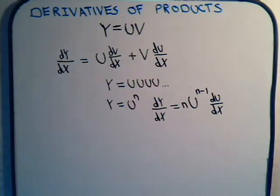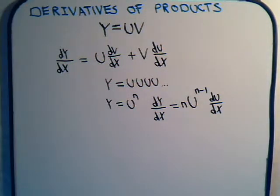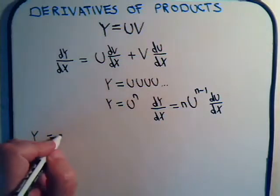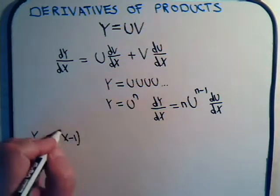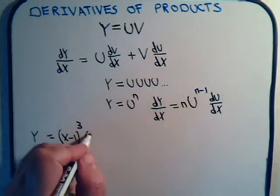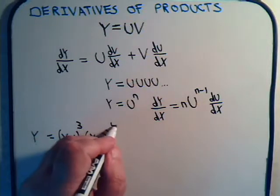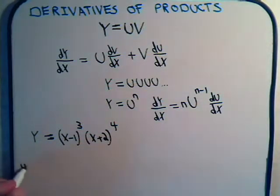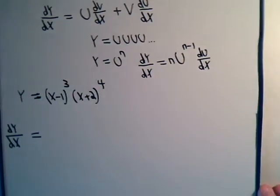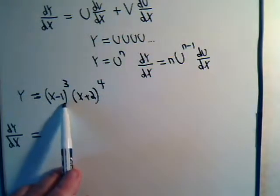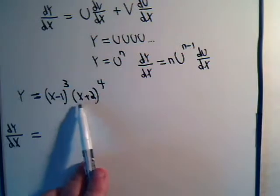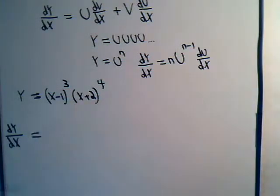We may not have time in this one video to look at both problems, so let's look at one of them right now. Let's say that y is equal to x minus one cubed, times x plus two raised to the fourth power, and we want to find dy/dx. So it's this first function — keep that the same — and we're going to multiply by the derivative of the second function.